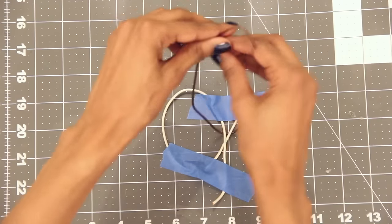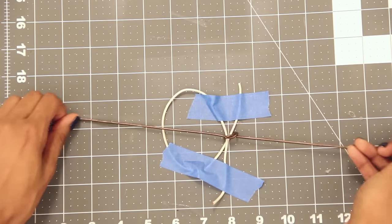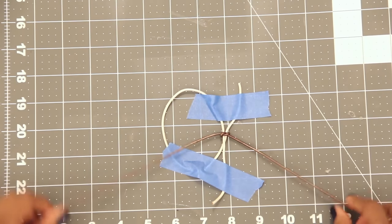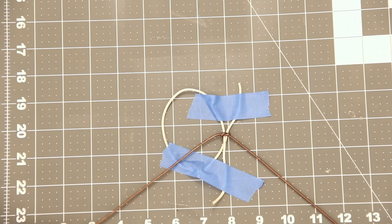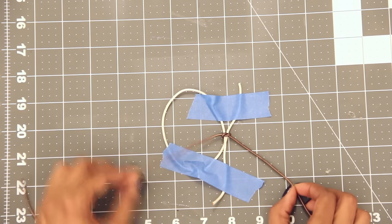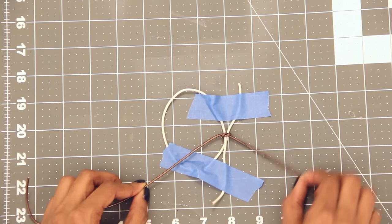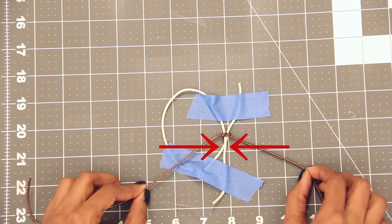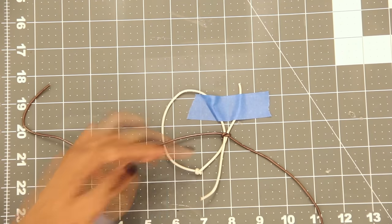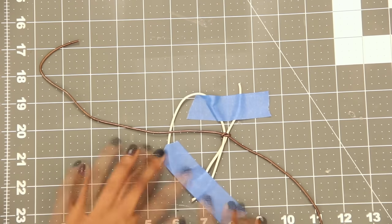You can tie an overhand knot first to make this easier or you can just get started forming square knots. Basically, we're doing the same steps as before. This is your left strand, this is your right, and these two together will be your middle strand. I'm moving my tape down just a little bit to have more space to work.